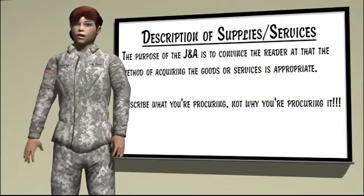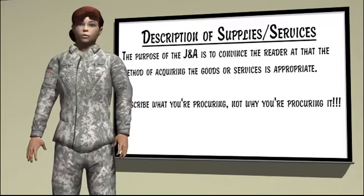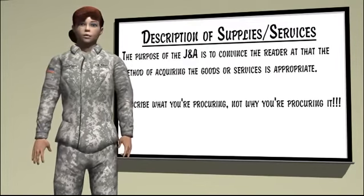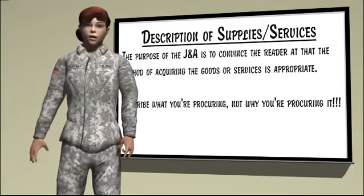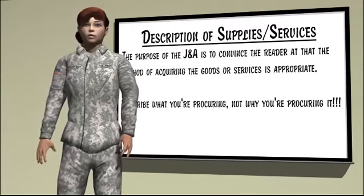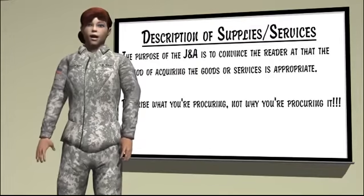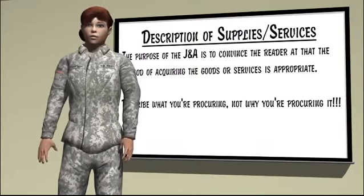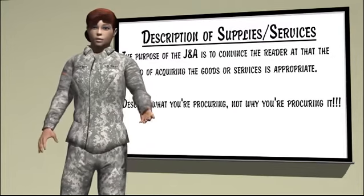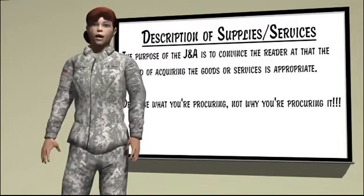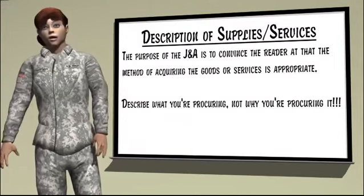Description of Supplies or Services. Briefly describe the supplies and/or services to be acquired. Include quantities, the period of performance, and an estimated total value. It is not required to provide or include detailed specifications or any equipment lists. Explain the requirement as much as possible in layman's terms so it can be understood by non-technically oriented reviewers who may not be familiar with the requiring activity or the project.